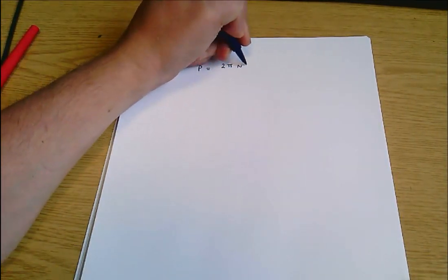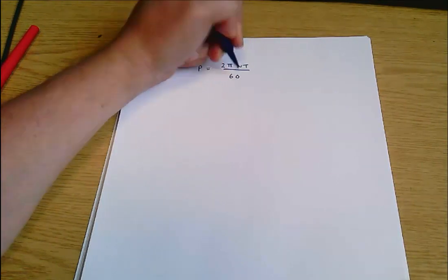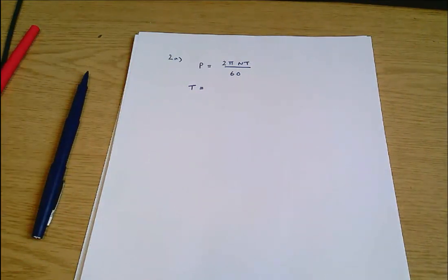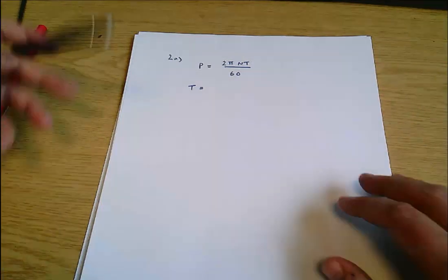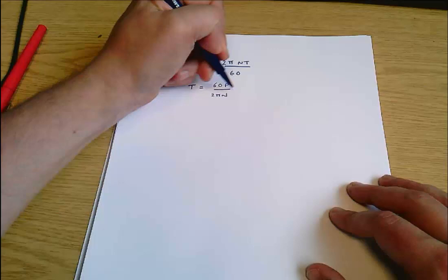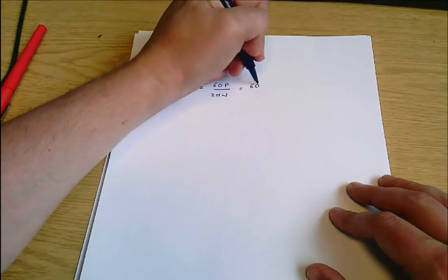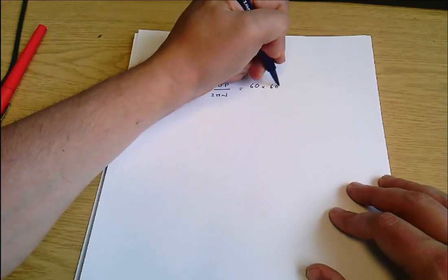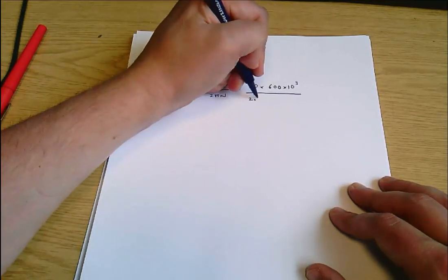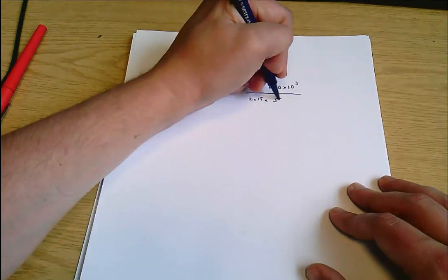First of all, we note that P equals 2 pi NT divided by 60, so therefore T, the torque that must be transmitted, is 60 P divided by 2 pi N, which here equals 60 times 600 kilowatts divided by 2 times pi times 300 rpm.